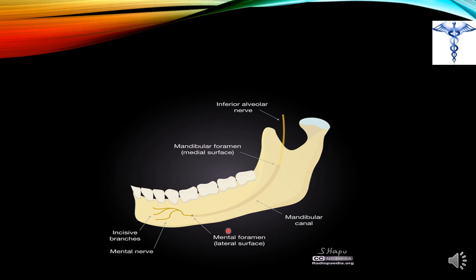Always remember, as it may be asked in viva or exams: the location of the mental foramen is below the second premolar teeth. Here you can see the three molar teeth and the two premolar teeth, so below the second premolar tooth is the mental foramen. The remaining teeth visible are the canine tooth and the two incisor teeth in front.